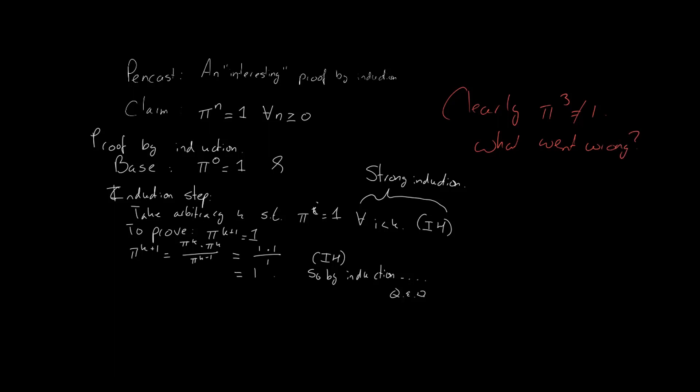Did you get it? It's a very subtle mistake. It's when we apply our induction hypothesis. Because by applying it to π to the power k minus 1, we are assuming that k is larger than or equal to 1.